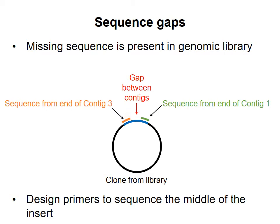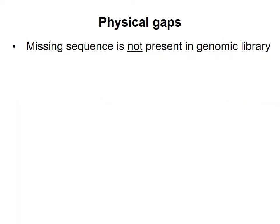You can then join the two contigs together into one larger contig. For the H. influenzae genome, 98 out of the 140 gaps were sequence gaps. That left them with 42 contigs with 42 gaps in between them that were not present in the genomic DNA library. This type of gap is called a physical gap. Physical gaps could occur because the sequence in the gap is toxic to E. coli cells, or just because of bad luck when the genomic library was created.